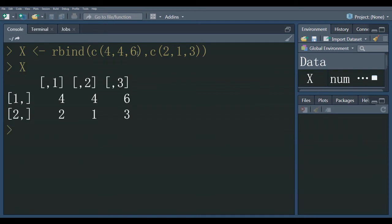This is the first vector that we write here. It forms the first row of the matrix: 4, 4, 6. And the second vector creates the second row of the matrix because we use the rowbind command. So, we create matrix X.